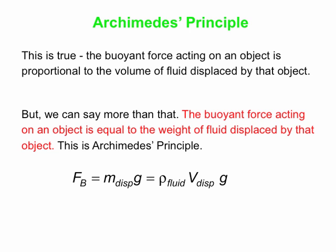And here it is as an equation. The buoyant force F_B is the mass of the fluid displaced times g — that's the weight of the fluid displaced, m times g. We can write mass as density times volume, so we get the density of the fluid times the volume of fluid displaced by the object in the fluid, multiplied by g. That is the buoyant force.